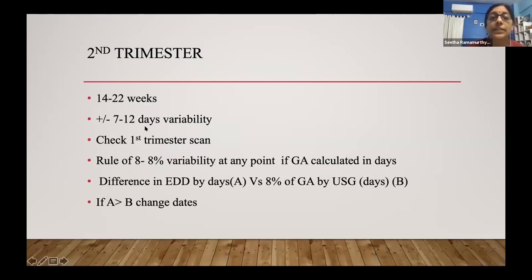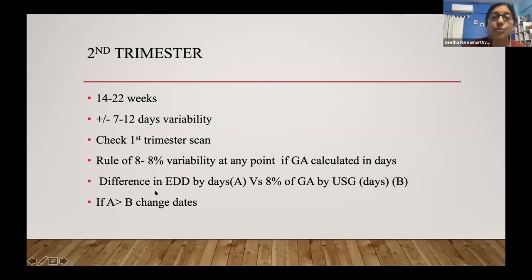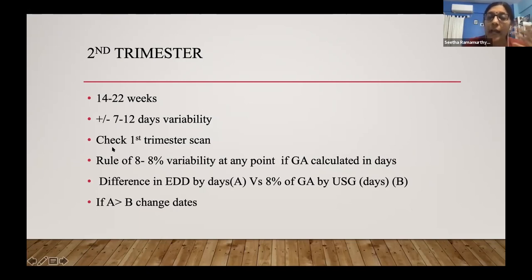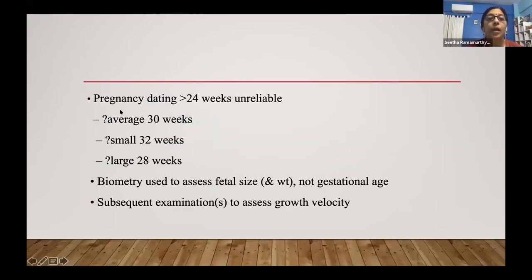In the second trimester, there is a variability of 7 to 12 days. Some centers use the rule of 8, where an 8% variability is applied to the gestational age in days. If the first trimester scan is available, use that. The transcerebellar diameter can give a rough estimate up to 26–28 weeks but shouldn't be the primary dating method. In the third trimester, pregnancy dating is unreliable — biometry is used only to assess fetal size and weight, not gestational age.